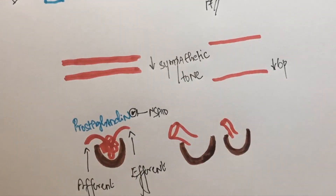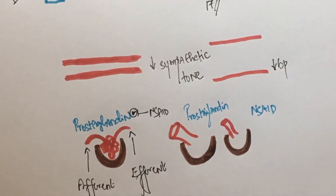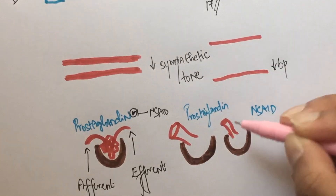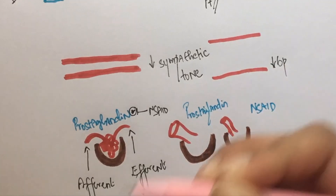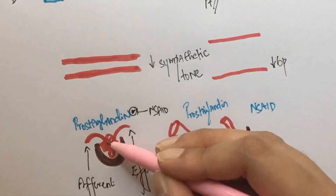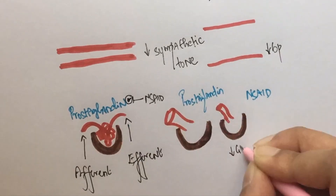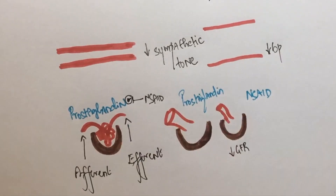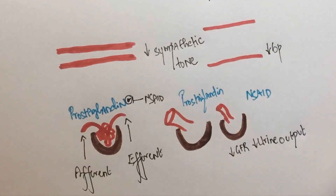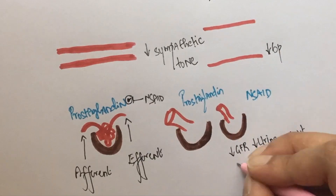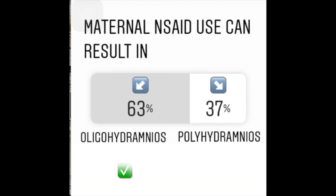So, if NSAIDs are used, the decrease in function of prostaglandins will reduce the dilation of the afferent arteriole, which will result in low blood flow. This will lead to a decrease in GFR. A decrease in GFR will further result in decreased urine output and hence oligohydramnios.